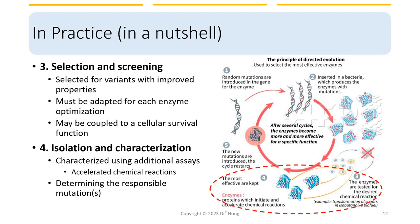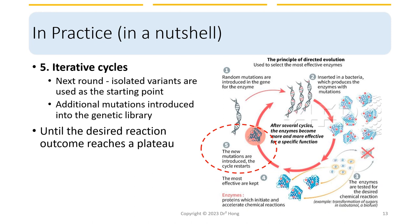Isolation and characterization follows. The best-performing variants are isolated from the library and characterized using additional assays and experiments to confirm their improved properties and determine the specific mutations responsible for the improvements. The selection process is iterative, and the isolated variants are used as the starting point for the next round of directed evolution, with additional mutations introduced into the genetic library, and the screening or selection process repeated to further improve the enzyme's properties. The goal is to continue the selection cycle until the desired reaction outcome reaches a plateau or maximum efficiency.